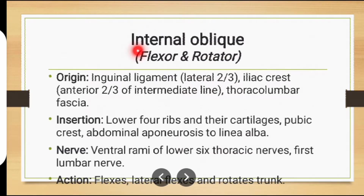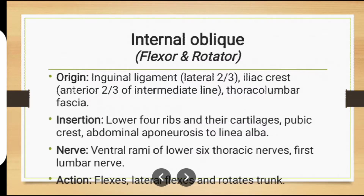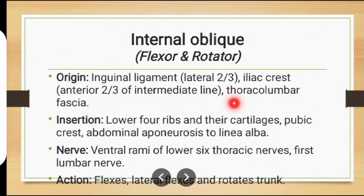The next muscle is internal oblique muscle. The muscle in green is internal oblique muscle. Origin: inguinal ligament, lateral two-thirds of iliac crest, anterior two-thirds of intermediate line, and thoracolumbar fascia.